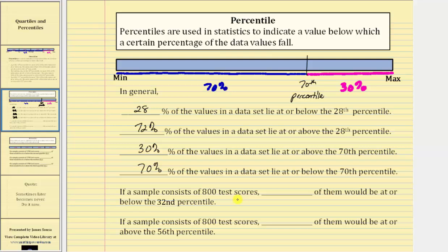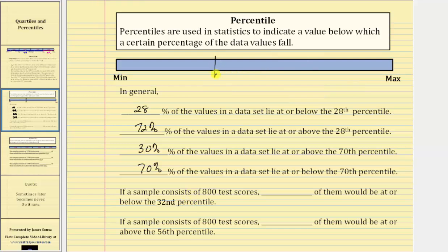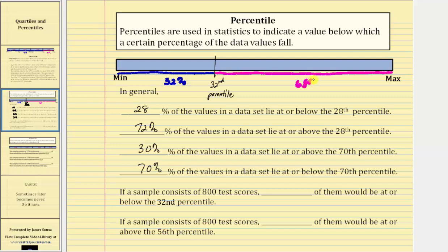If a sample consists of 800 test scores, how many of them would be at or below the 32nd percentile? The 32nd percentile is approximately here, where 32% of the data values — these data values here — are at or below the 32nd percentile, which means 68% are at or above. That would be 32% of 800, which is equal to 0.32 times 800, which is 256. So 256 of the 800 test scores would be at or below the 32nd percentile.